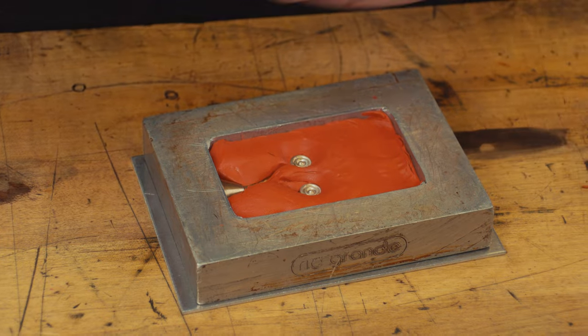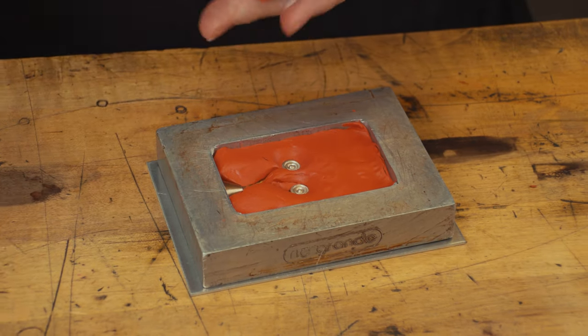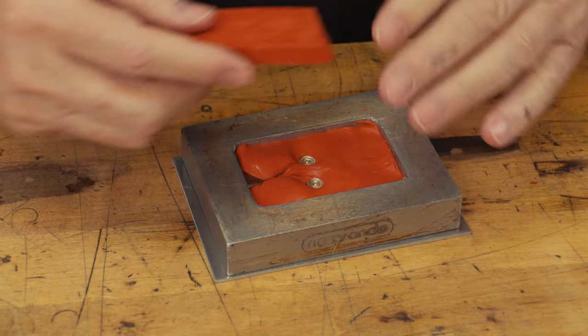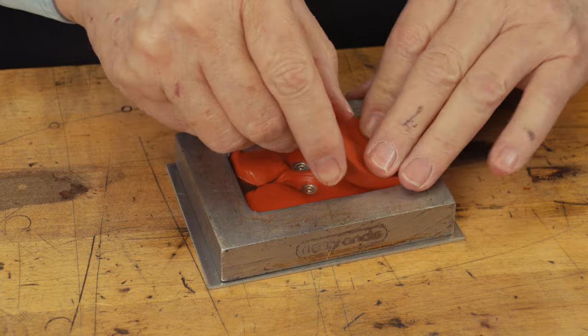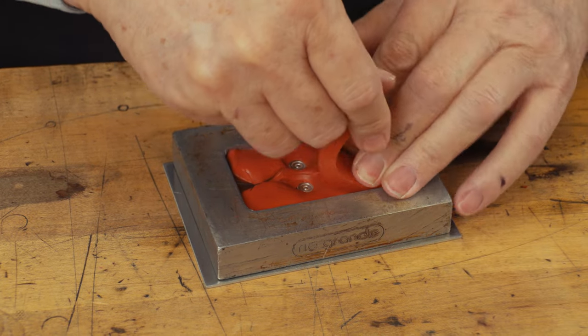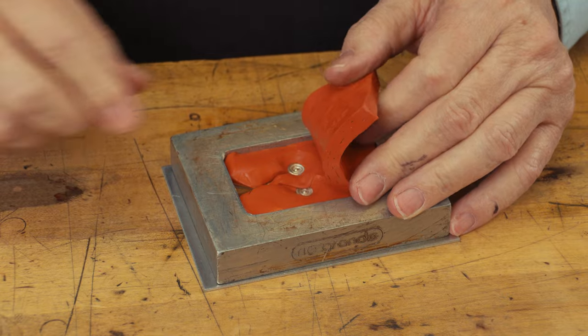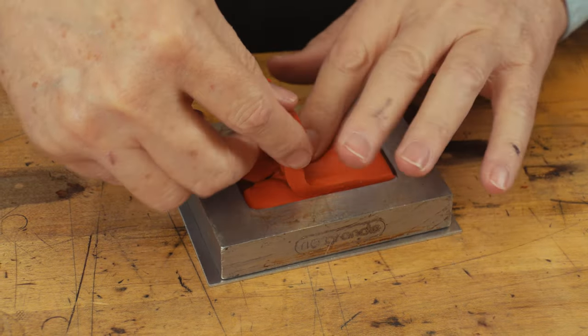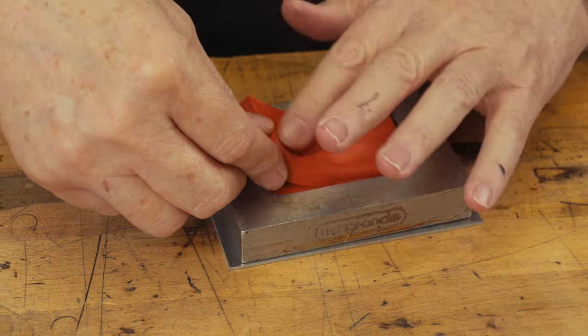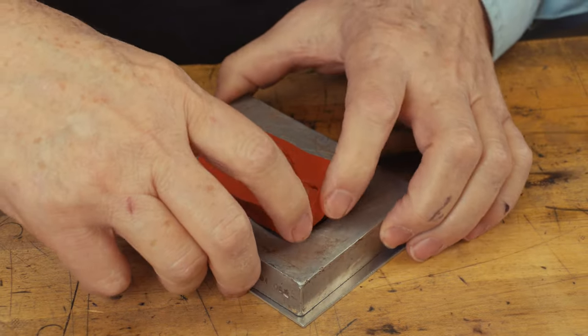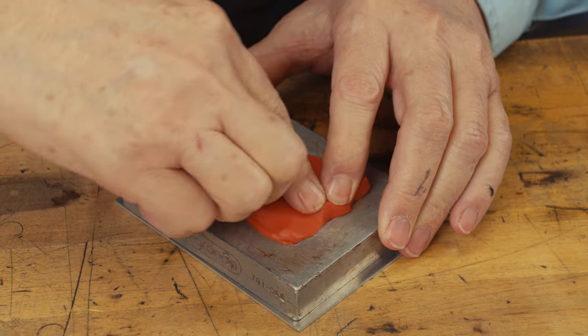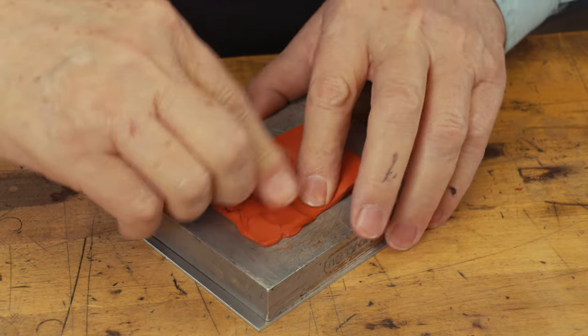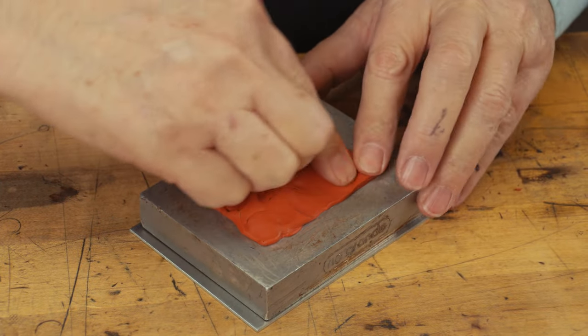Then I'll put the last sheet on the top. Doing it the same way, start on one end, kind of roll it down, try not to trap any air. Now this sheet is definitely going to stick above the frame and I'll show you how I deal with that. If you have a little rolling pin, you could roll across and press it down that way. To get it even with the top of the mold frame, I'm just going to take this scraper and go across like this.